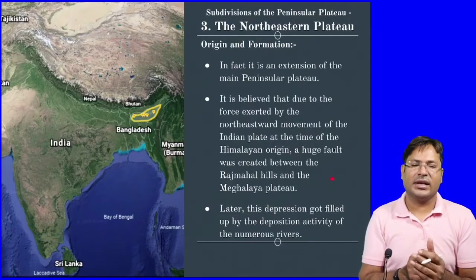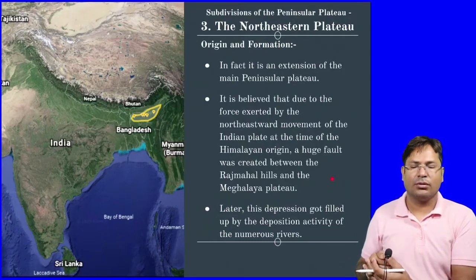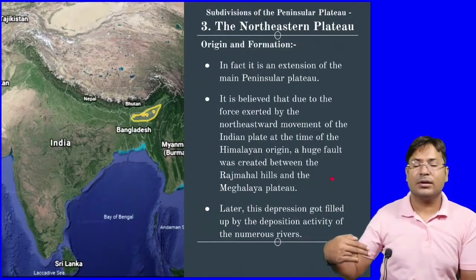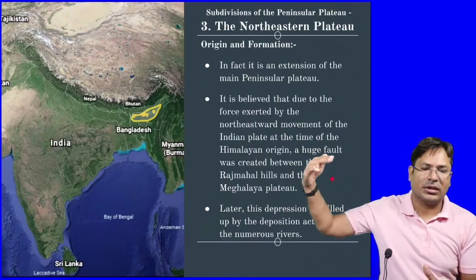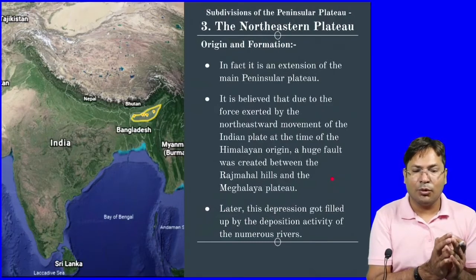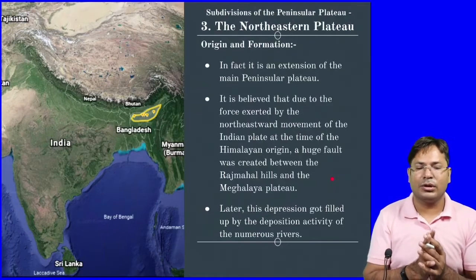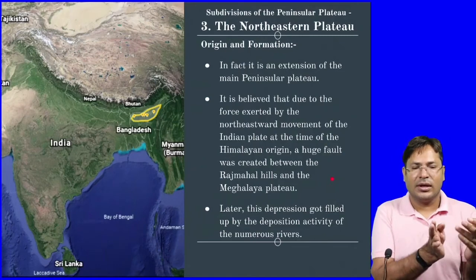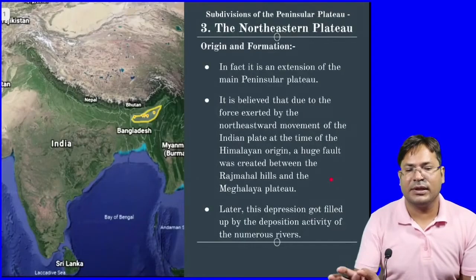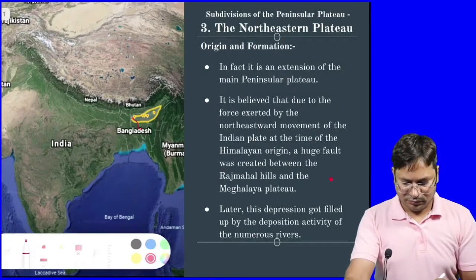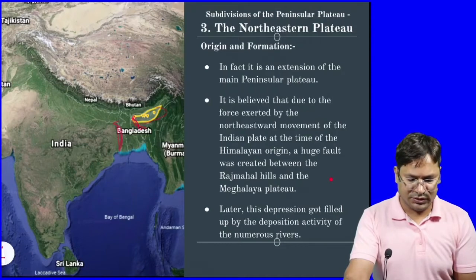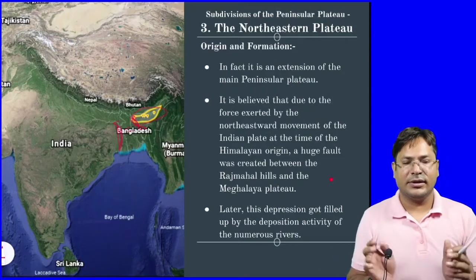It is believed that the Indian Plate was moving north to north, so there was pressure and a huge fault was created. Earlier this was part of the Peninsular Plateau — both the main plateau and this extension were together. But at the time of the formation of the Himalayan mountains, the fault separated them.